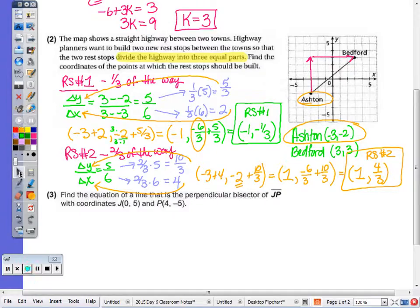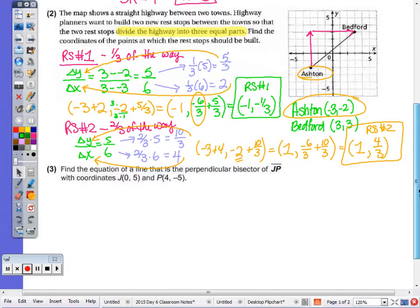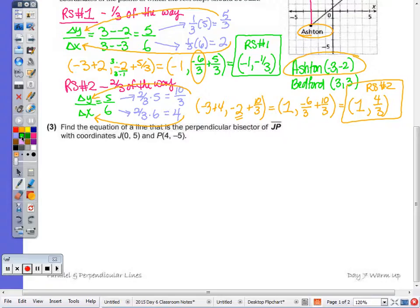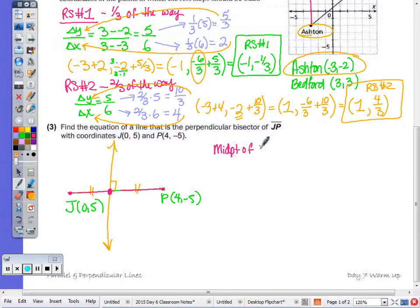Number 3, find the coordinates of a line that is the perpendicular bisector of JP. So I'm going to sketch segment JP. Coordinates of J are 0, 5. Coordinates of P are 4, negative 5. I'm going to write the equation of the perpendicular bisector, which is here, in orange. Now, given the endpoints of the green segment, how can I write the equation of the orange? Well, I know that it goes through the midpoint of JP, as this point is on both lines. So I'm going to start by finding the midpoint of JP.